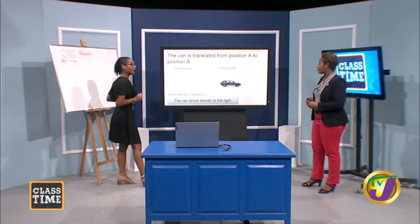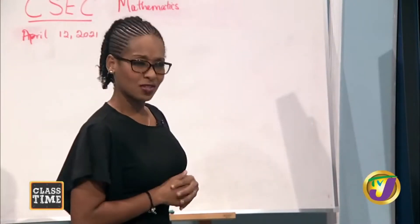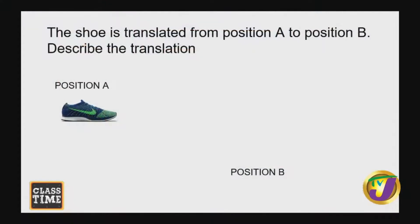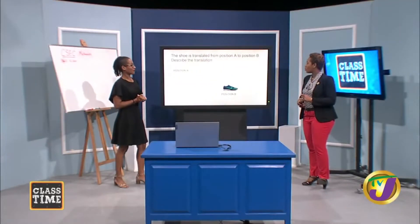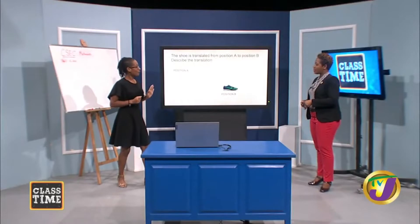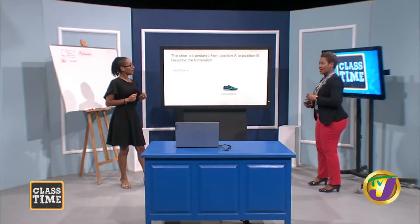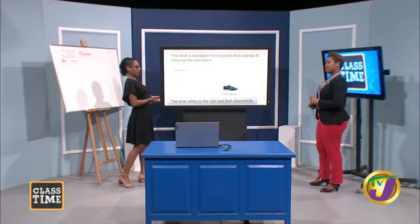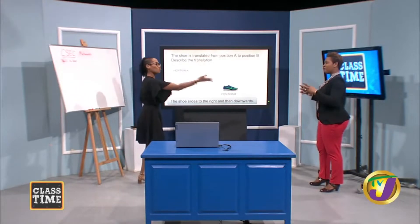Let's look at the next one. We have a shoe — a nice sneaker — and there's going to be a change in location. Initially, it slid or glided over to the right, and then it went down. So you're giving me two movements: it slides to the right, and then it went down. I wonder what it would look like if we put some units to it on graph paper — fine-tuning this movement.